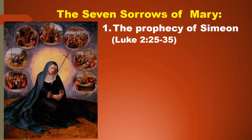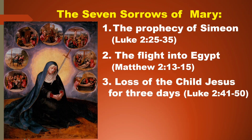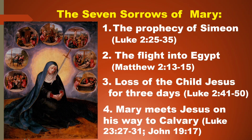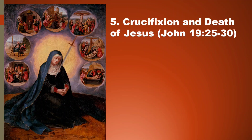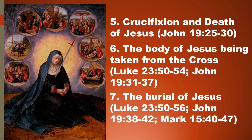The Seven Sorrows of Mary: 1. Prophecy of Simeon. 2. The Flight into Egypt. 3. Loss of the Child Jesus for Three Days. 4. Mary Meets Jesus on His Way to Calvary. 5. Crucifixion and Death of Jesus. 6. The Body of Jesus being taken from the cross. 7. The Burial of Jesus.